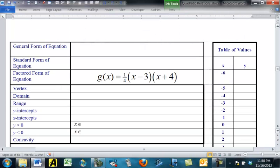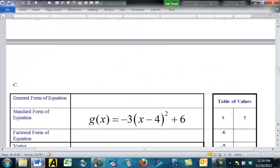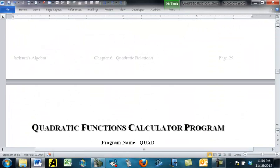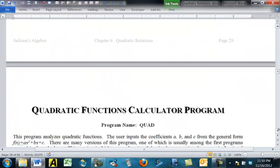And I have an example of each one, one starting with the general form, one with the factored form, and one with the standard form, and then you get to figure out all the other missing stuff.